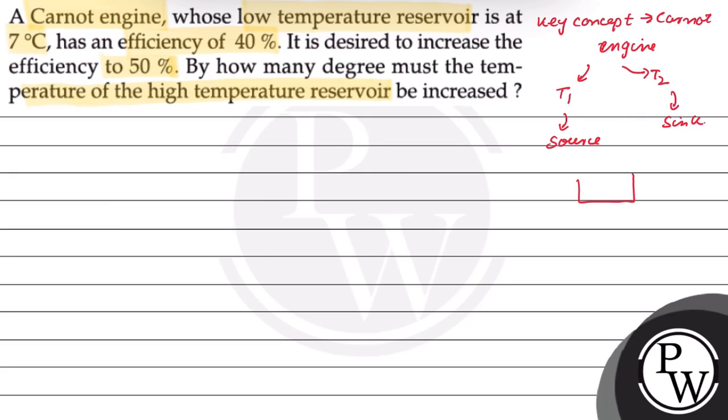Carnot engine में source से Q1 amount of heat energy is taken जो कि engine को दी जाती है और engine W amount of work करता है. But this same engine Q2 amount of heat reject out कर देता है एक sink में जिसका temperature T2 है और इस at lower temperature.